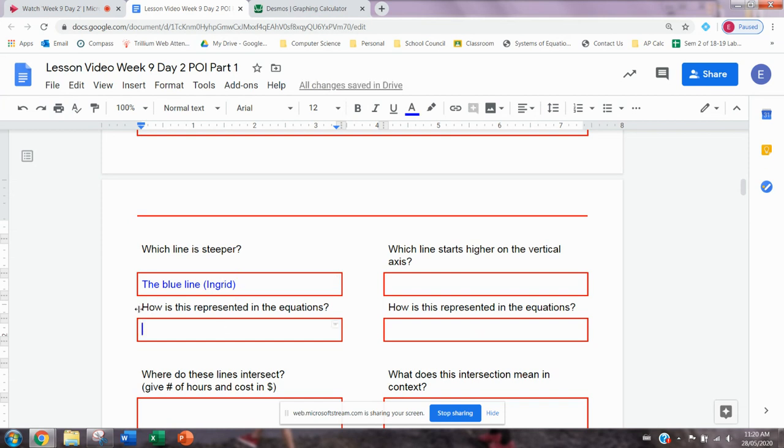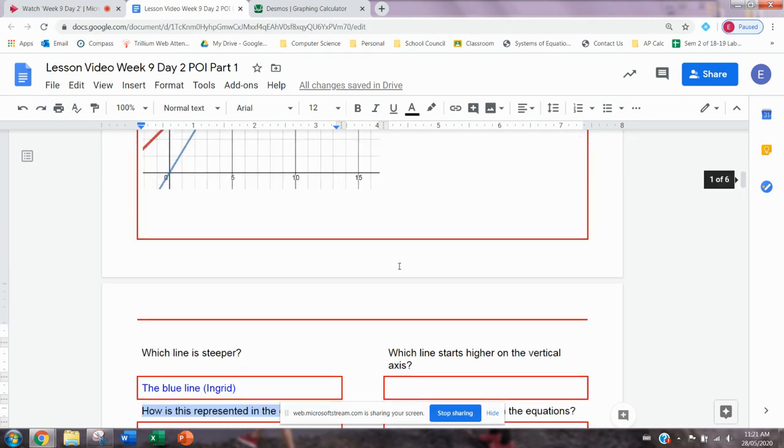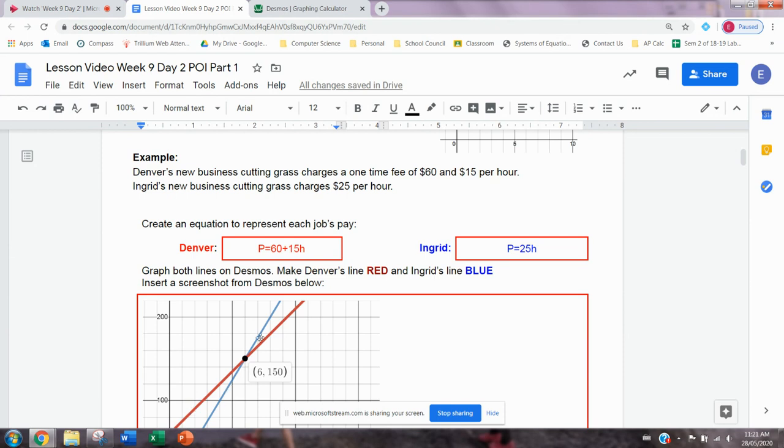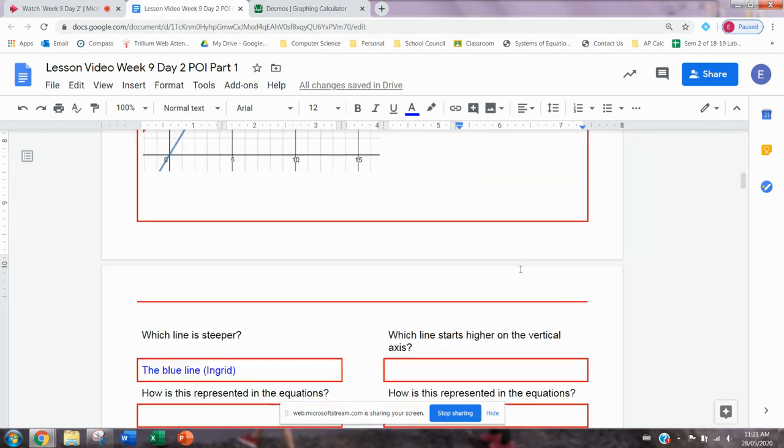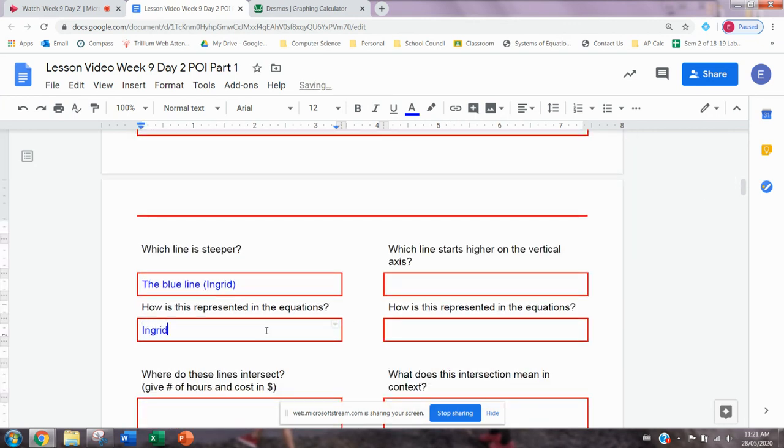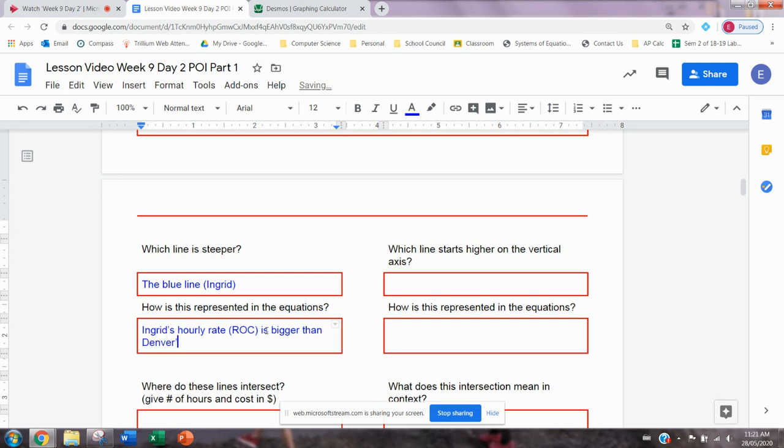And then it says, how is this represented in the equations? So it's asking me how in the equations do we see a steeper number? Now, remember the steepness is the rise and run. So that's the ROC or the hourly rate in this situation. So Ingrid's hourly rate is 25 and Denver's is 15. So Ingrid has a bigger ROC or hourly rate and that makes her line steeper. So I'm going to say Ingrid's hourly rate, which is the ROC, is bigger than Denver's. So that makes a steeper line.